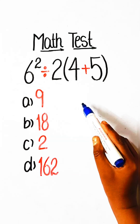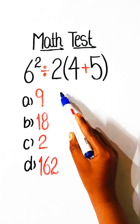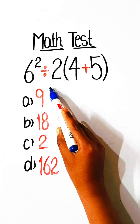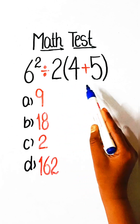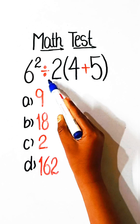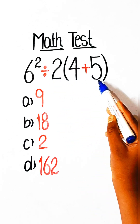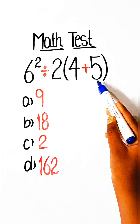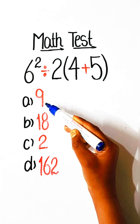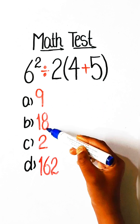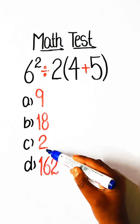Hello everyone, welcome to my YouTube channel. In this video we will solve this basic math expression: 6 squared divided by 2 under bracket 4 plus 5 equals what? Option A: 9, Option B: 18, Option C: 2, Option D: 162.